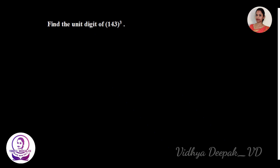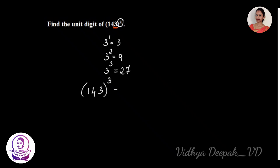Next, let's find the unit digit of 143 to the power 3. The last digit of this number is 3. Whenever 3 is the last digit, you find 3 to the power of whatever power is given: 3^1 = 3, 3^2 = 9, 3^3 = 27. So the unit digit of 143 cubed is 7.